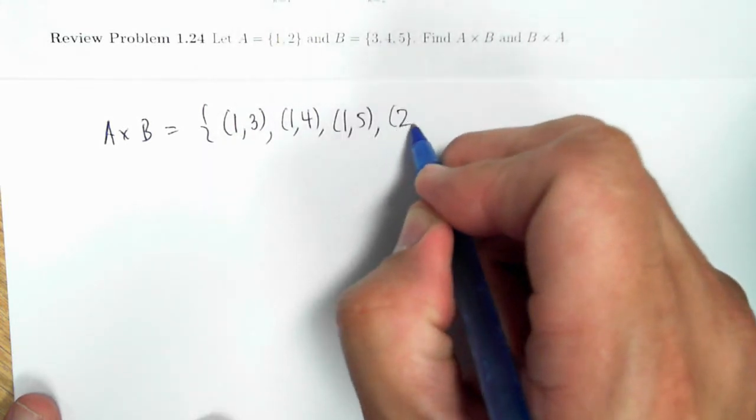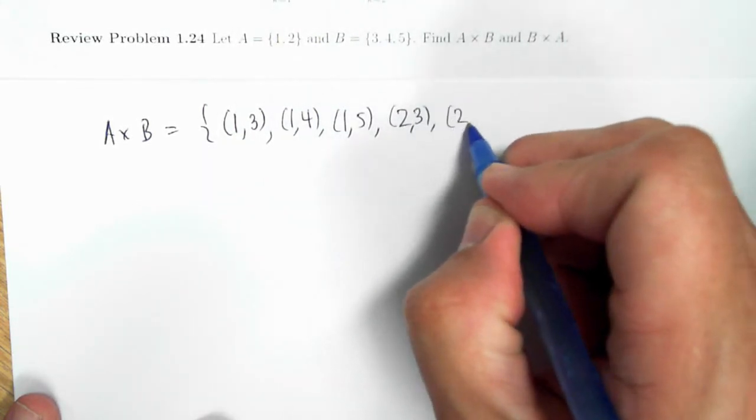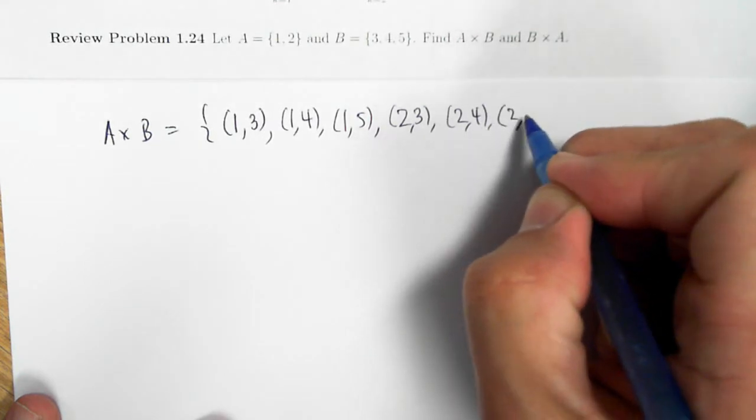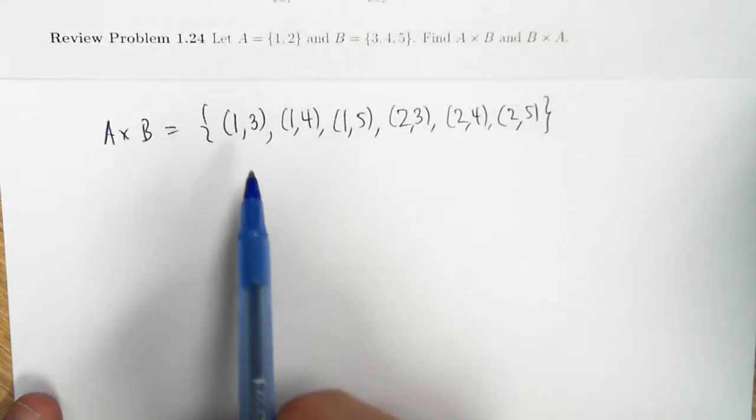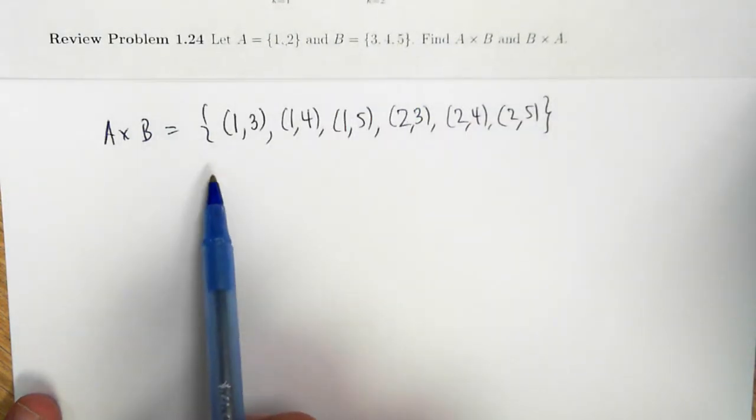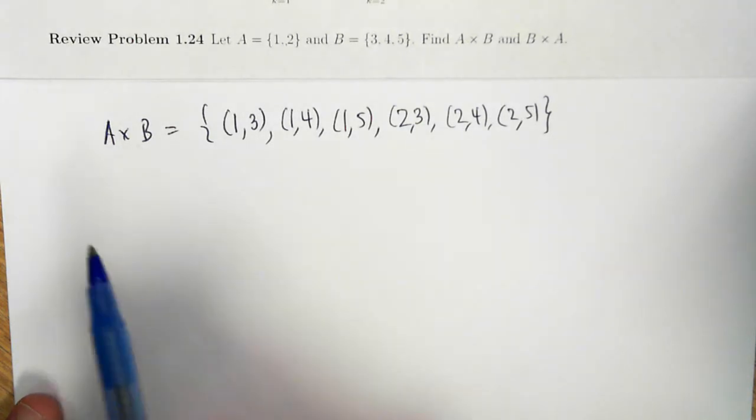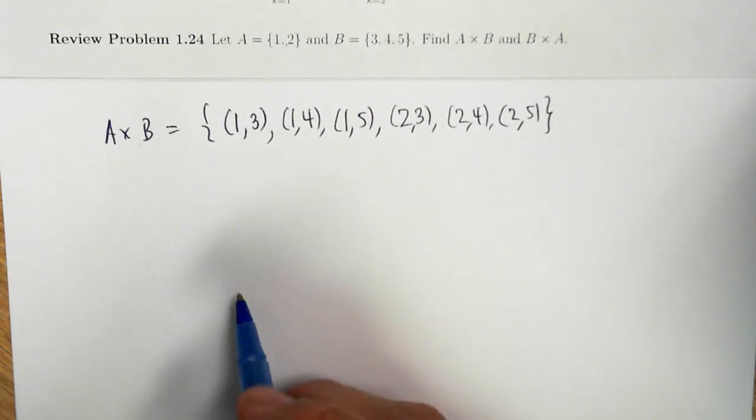Then the other ordered pairs would be (3,1), (3,2), (4,1), (4,2), (5,1), and (5,2). This had two elements, this had three elements, not too surprisingly, this Cartesian product has two times three, six elements.